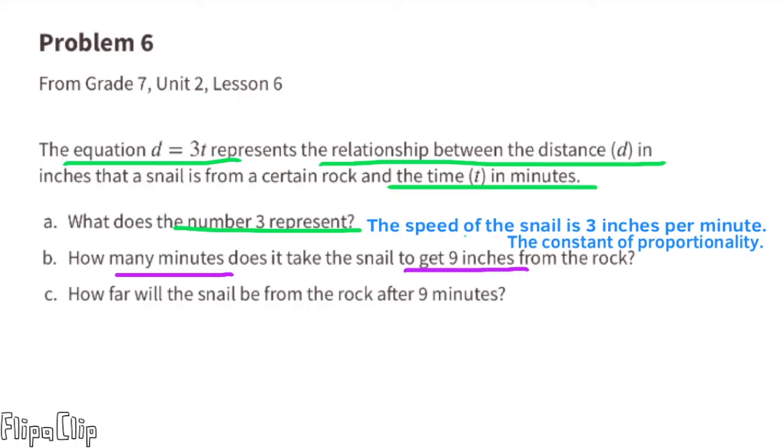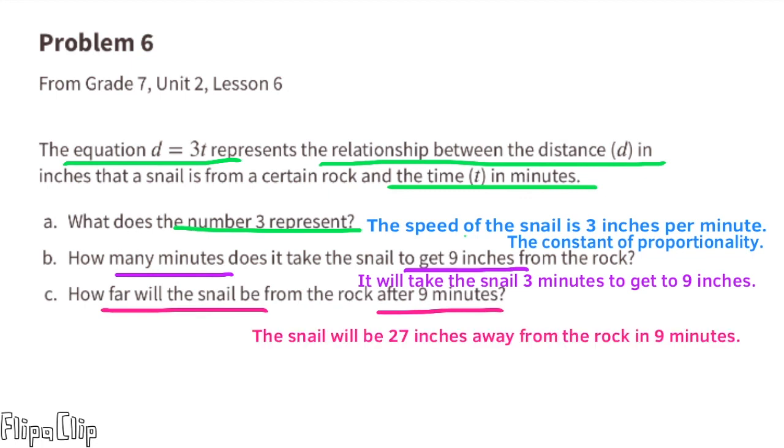3 inches times 3 is 9, and 1 minute times 3 is 3 minutes. It should take the snail 3 minutes to get 9 inches from the rock. C: How far will the snail be from the rock after 9 minutes? 1 minute times 9 equals 9 minutes, and 3 inches times 9 equals 27 inches. The snail will be 27 inches away from the rock in 9 minutes.